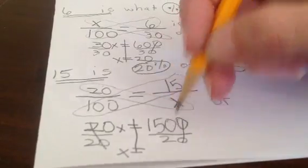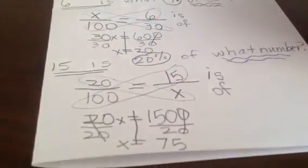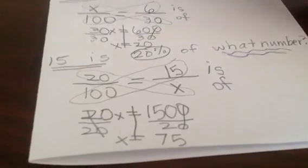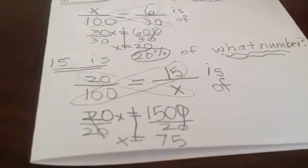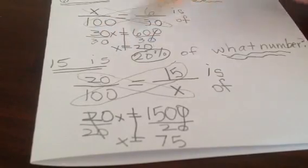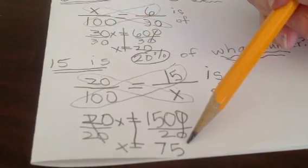A hundred and fifty divided by two is seventy-five. So back to our original question, fifteen is twenty percent of what number? Well, fifteen is twenty percent of seventy-five. Isn't this awesome? I love this formula.